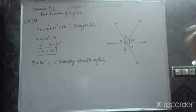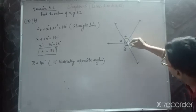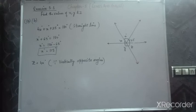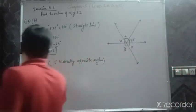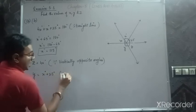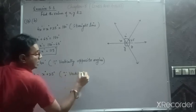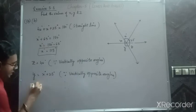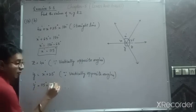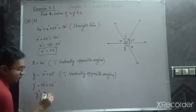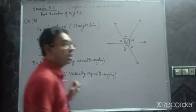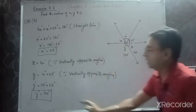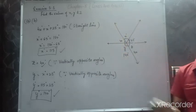Now we find Y. If Z and 40° are vertically opposite angles, then Y and (X + 25°) must also be vertically opposite angles. So Y = X° + 25° = 115° + 25° = 140°. You can validate: if Y is 140° and this is 40°, that is a straight line — 140° + 40° = 180°. Everything checks out correctly.